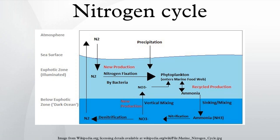Ammonification or mineralization is performed by bacteria to convert the ammonia to ammonium. Nitrification can then occur to convert the ammonium to nitrite and nitrate. Nitrate can be returned to the euphotic zone by vertical mixing and upwelling, where it can be taken up by phytoplankton to continue the cycle. N2 can be returned to the atmosphere through denitrification. Ammonium is thought to be the preferred source of fixed nitrogen for phytoplankton because its assimilation does not involve a redox reaction and therefore requires little energy.